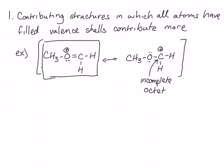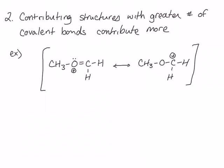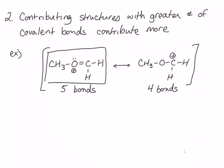The second rule for judging the importance of contributing structures is that contributing structures with a greater number of covalent bonds are lower in energy and therefore contribute more to the overall resonance hybrid. For example, comparing these two contributing structures and counting up their covalent bonds, the structure on the left has five bonds and the structure on the right has four covalent bonds, again indicating that the structure on the left will be the major contributor.